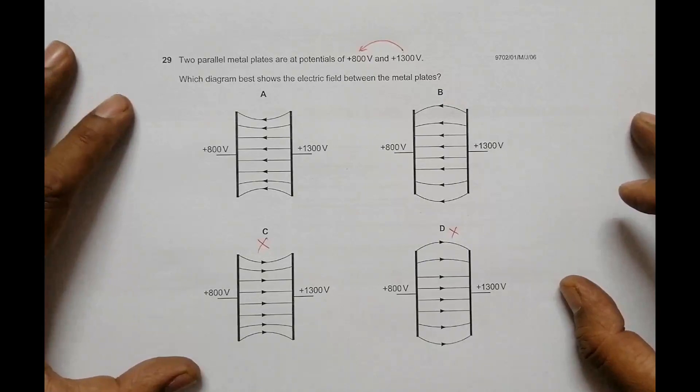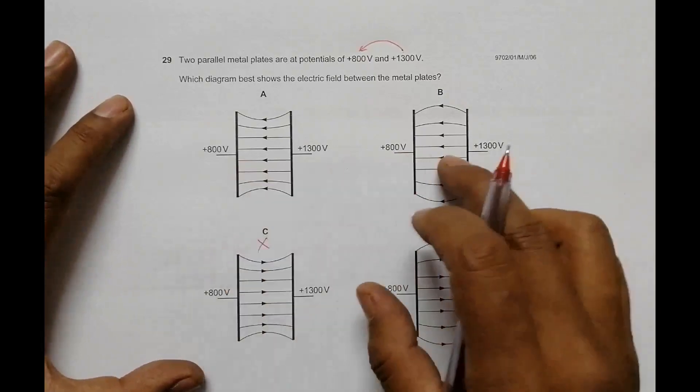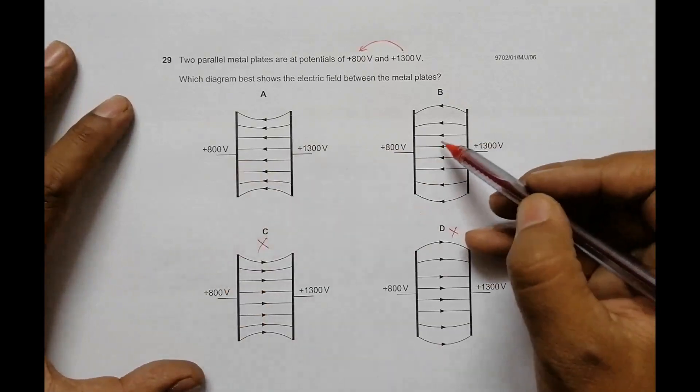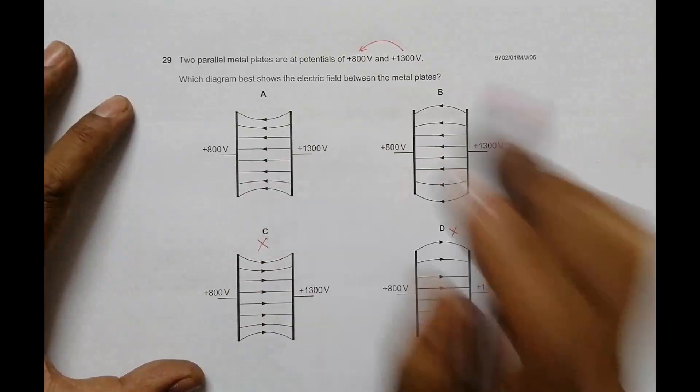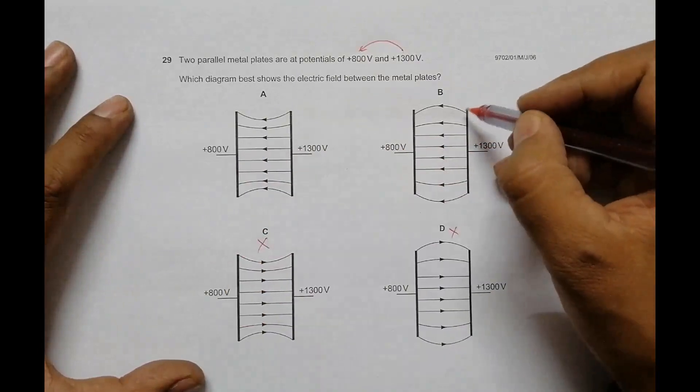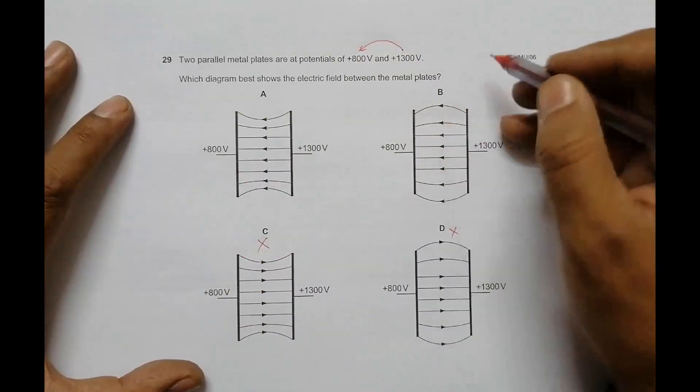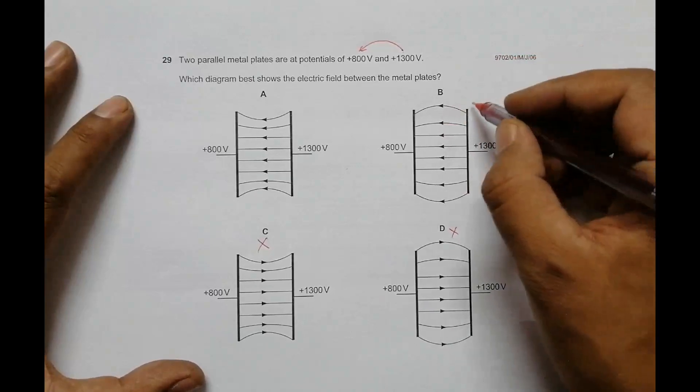Now, what's happening is in the middle regions the lines are parallel, which is okay. But at the border regions, the lines of force should be slightly wider. For example...